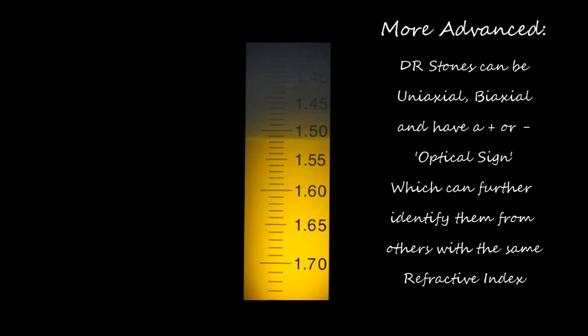Even more information can be taken from the refractometer if we still can't decide between two possible identities of a stone. By carefully analyzing the movement of these shadow edges we can decide whether the stone has one optic axis uniaxial or two optic axis biaxial.